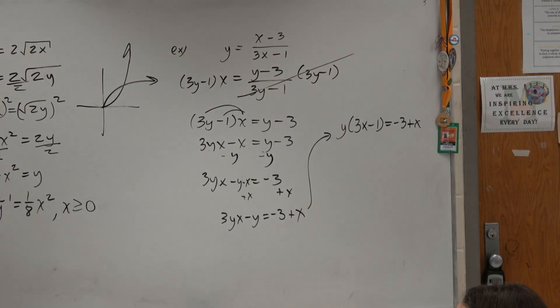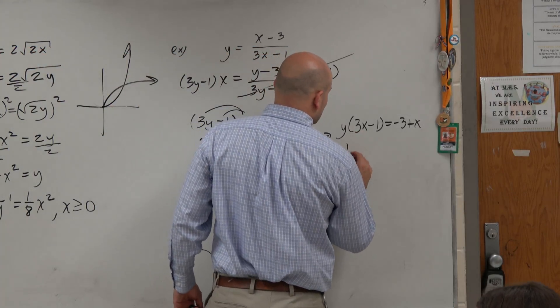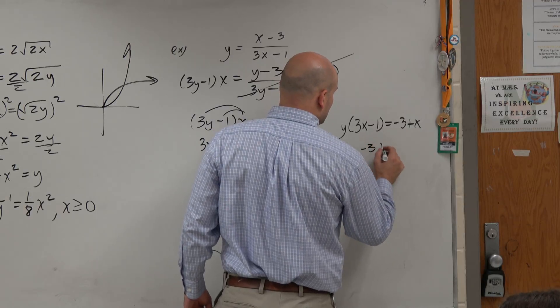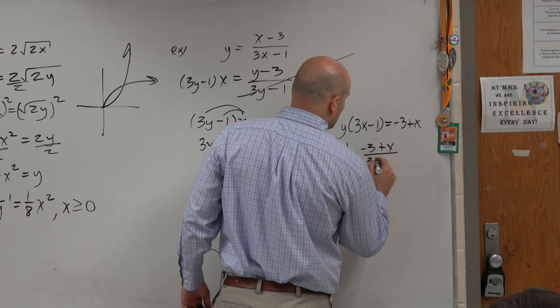Now, I see the only thing that's happened to my y is being multiplied by this. So therefore, y inverse is equal to negative 3 plus x divided by 3x minus 1.